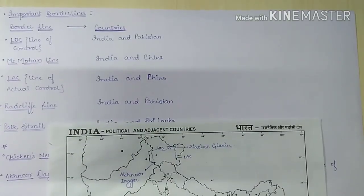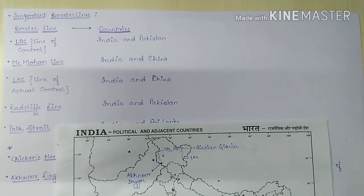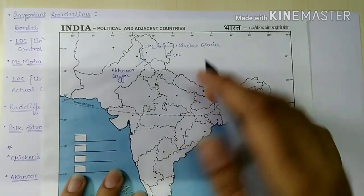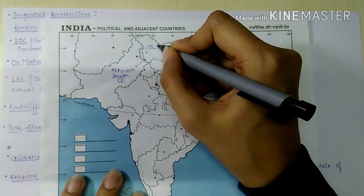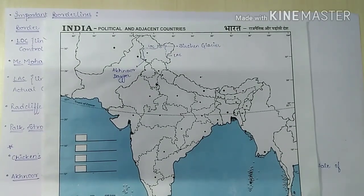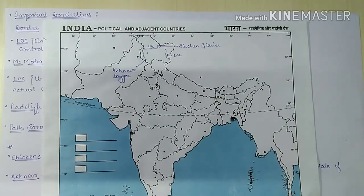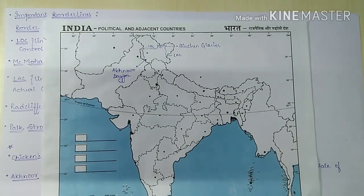Now we will look at the important border lines of India with its neighboring countries. The first is the LOC — Line of Control. It is formed in the controlled part of the former princely state of Jammu and Kashmir. This line is not an internationally recognized border but is a de facto border. It was originally known as the Ceasefire Line but was re-designated as LOC on 3rd July 1972 following the Shimla Agreement.